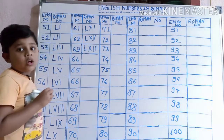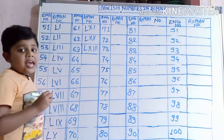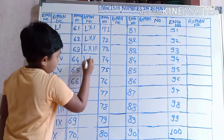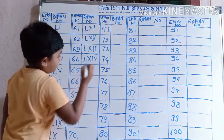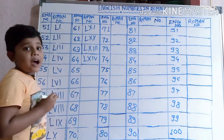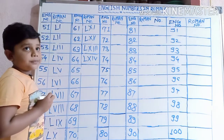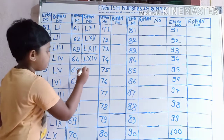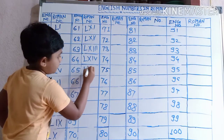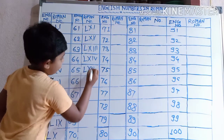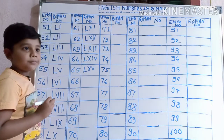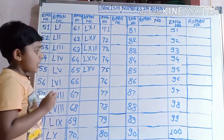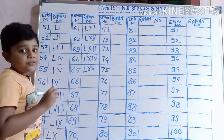64 ko: L, X, I, I, I. 65 ko: L, X, V. 66 ko: L, X, V, I.